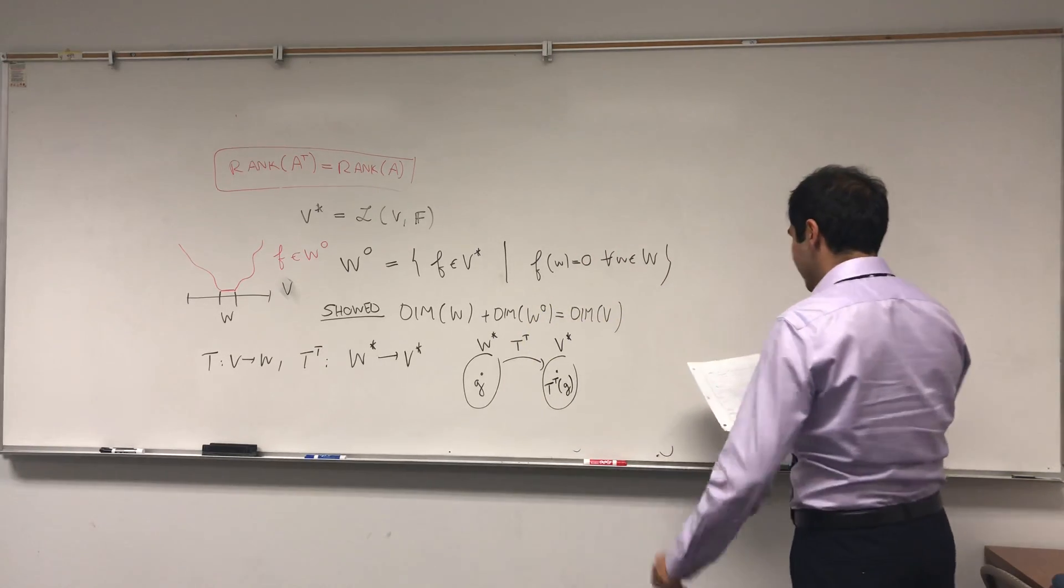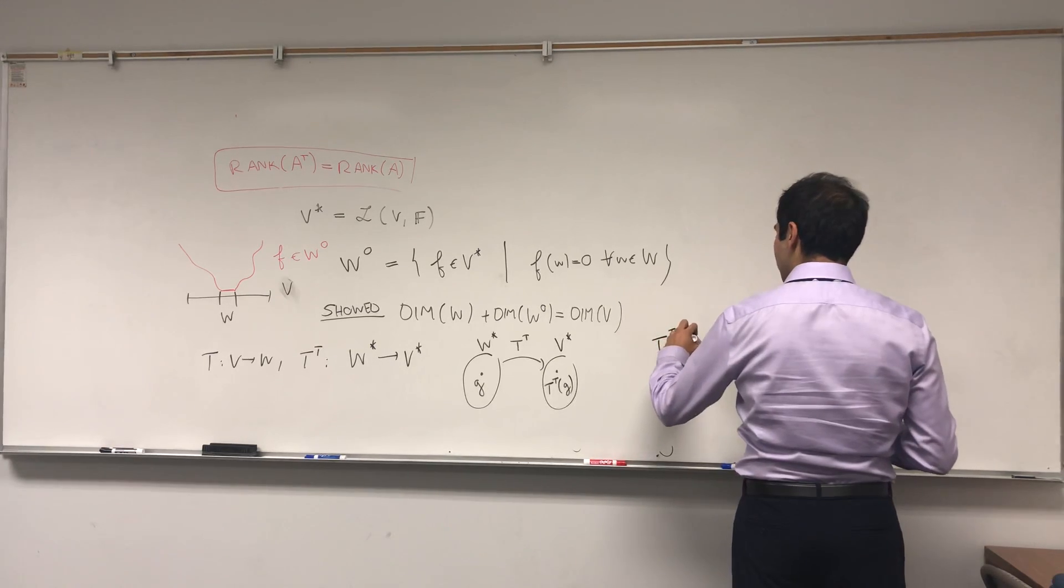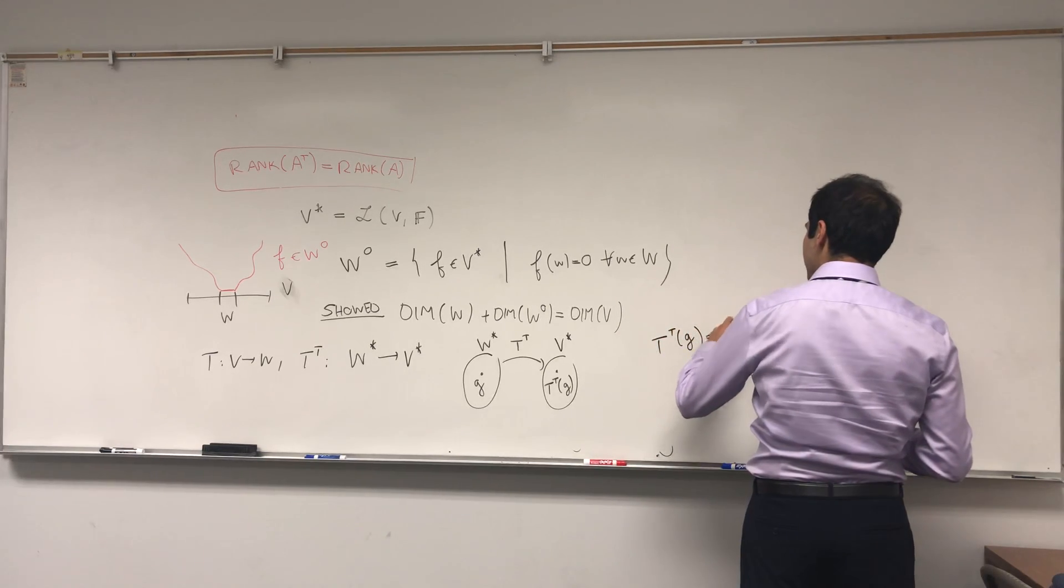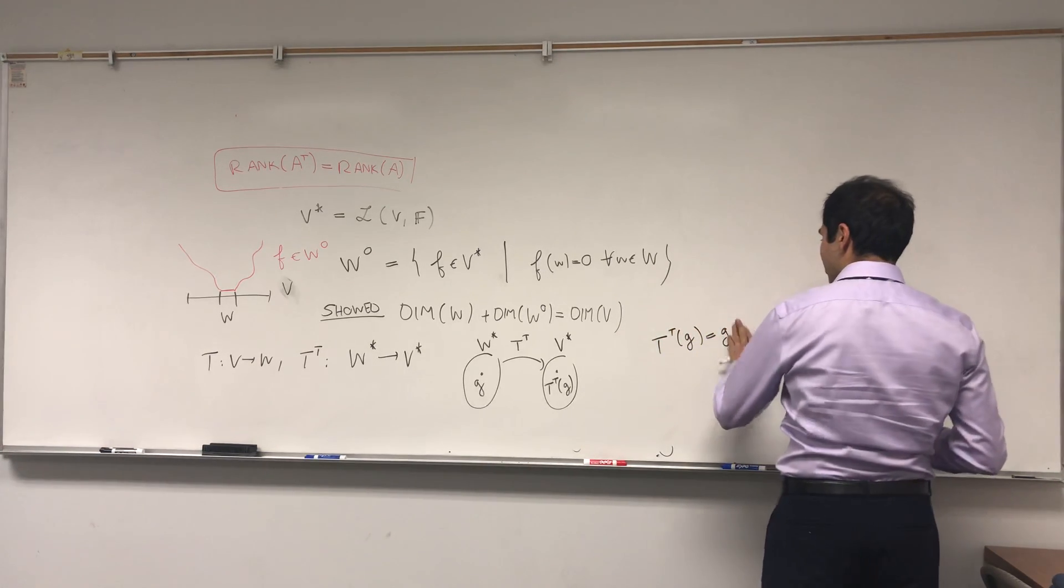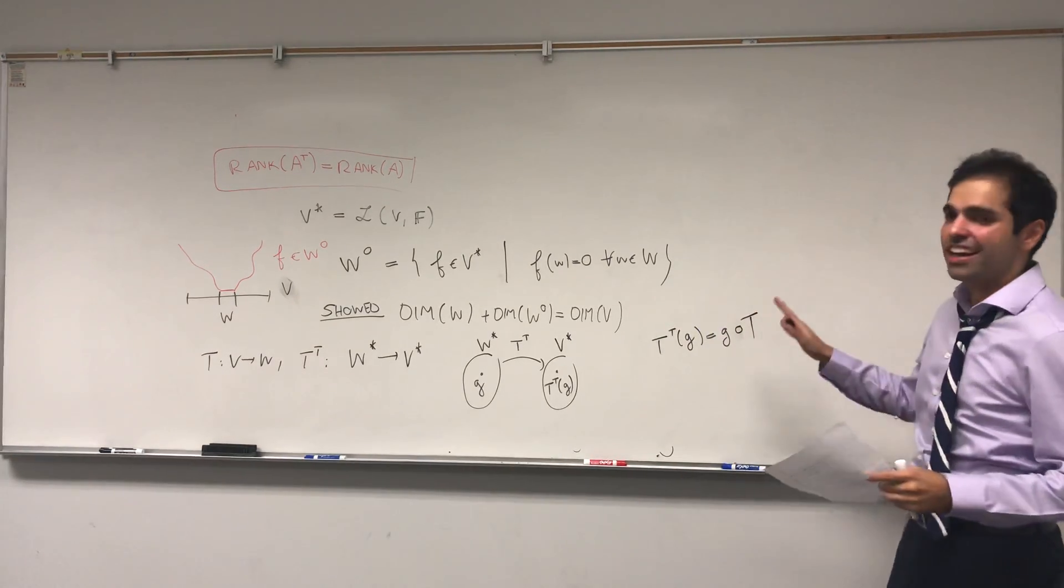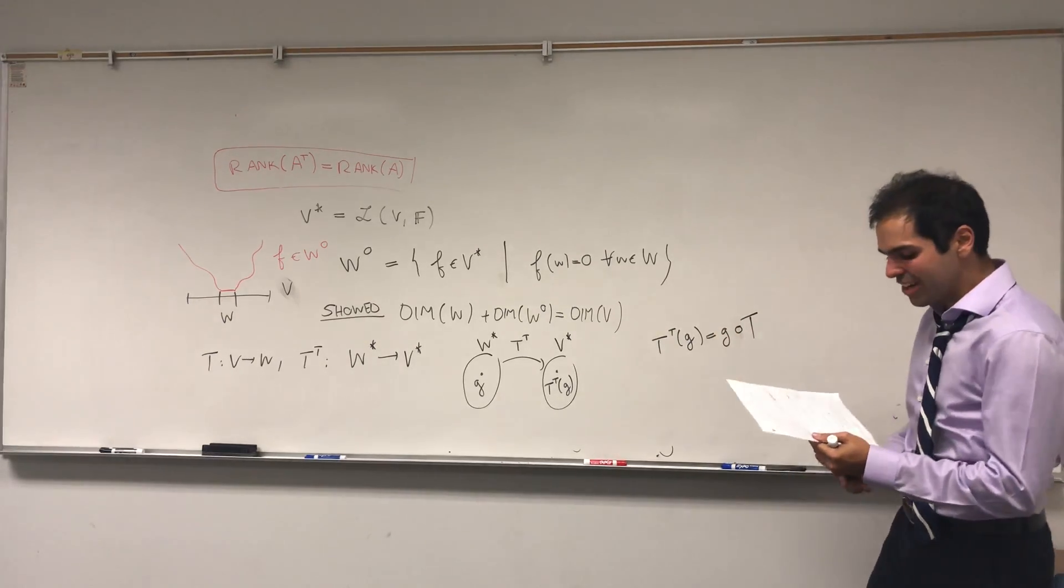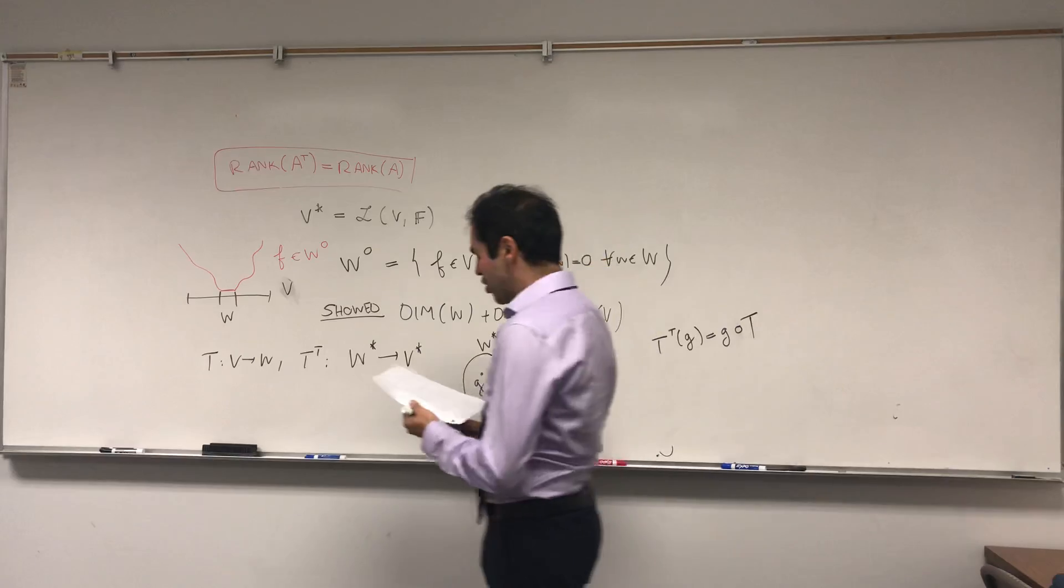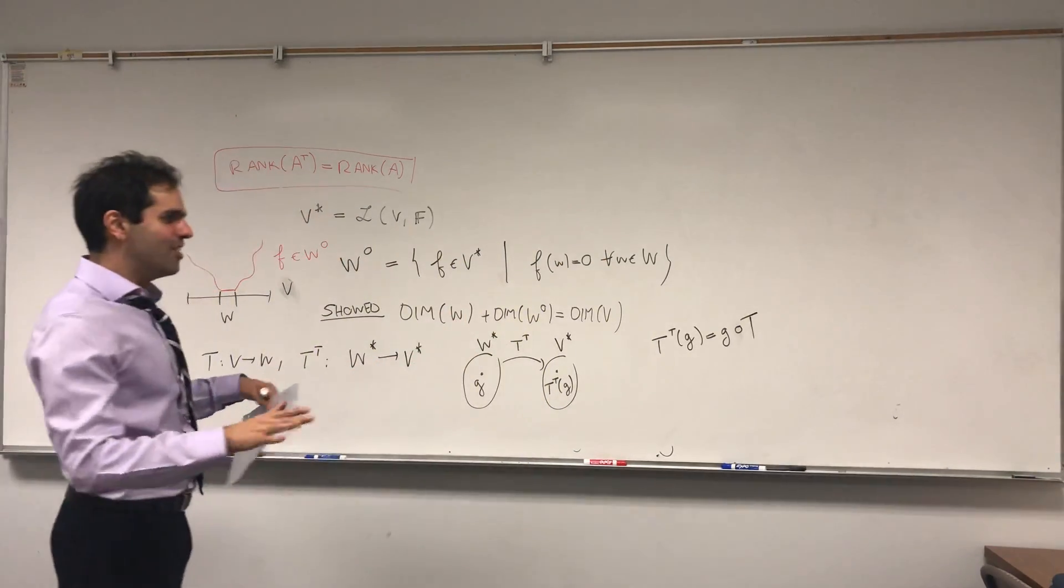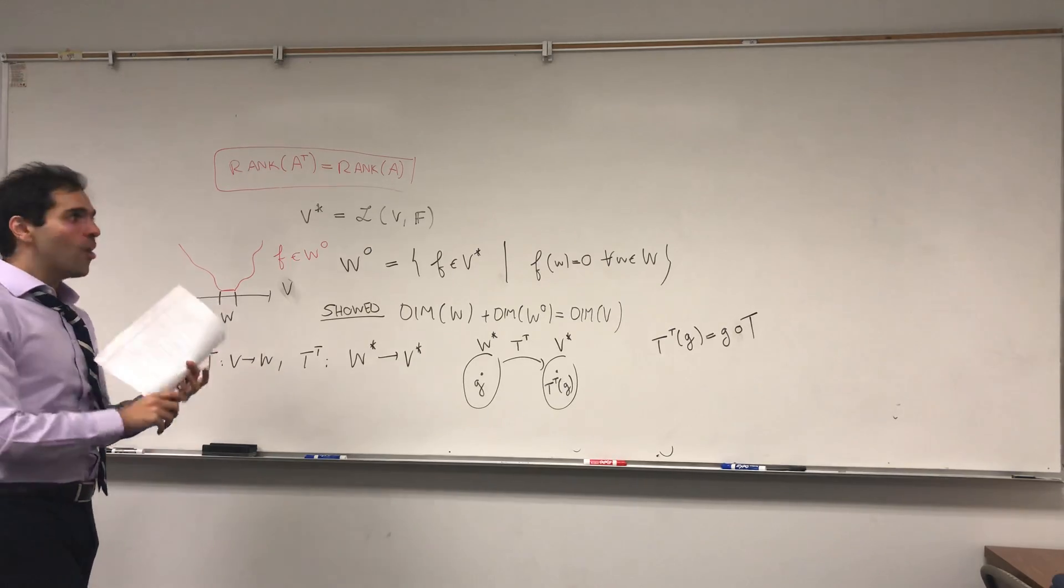And it takes a functional in W star as an input and spits out another functional in V, T transpose of G. And the way T transpose of G is defined, T transpose of G is just G of T from Game of Thrones. So G composed with T. And again, I've made a bunch of videos on that. Make sure to watch them. It's really cool.